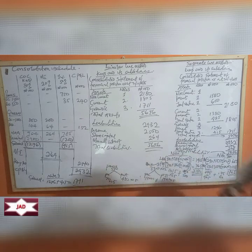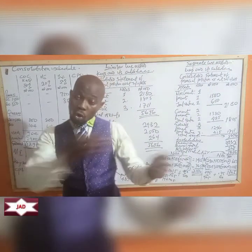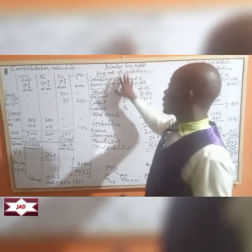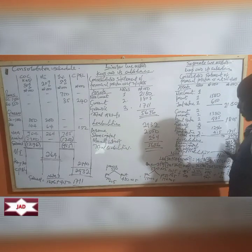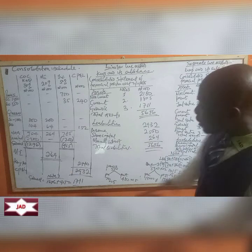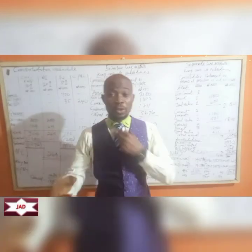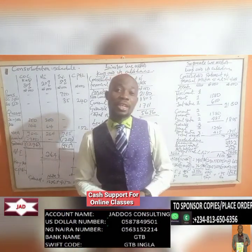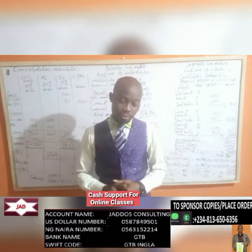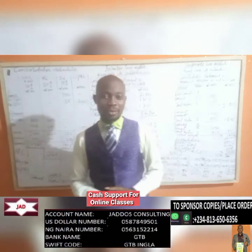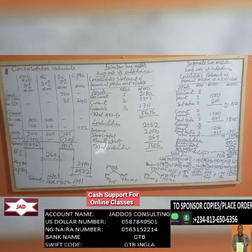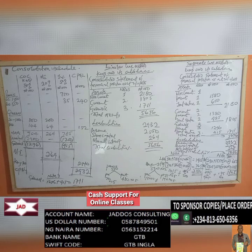What we've done here is report the group balance sheet involving joint venture using both methods — the similar line method and the separate line method. Take your time and go through it. If you have questions, we'll address them. Don't forget you can support us by sponsoring copies of my textbook for free distribution. Thank you. See you next class.